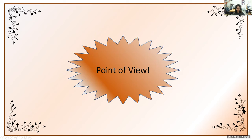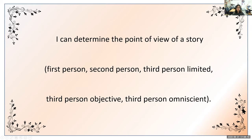Today's goal is the following: I can determine the point of view of a story, which can be first person, second person, or third person. There are three categories for third person: third person limited, third person objective, and third person omniscient. So basically we're going to be able to determine the point of view of a story given these five options.